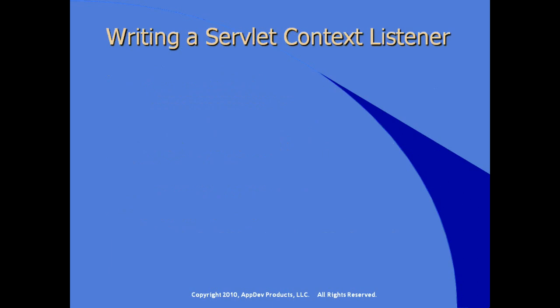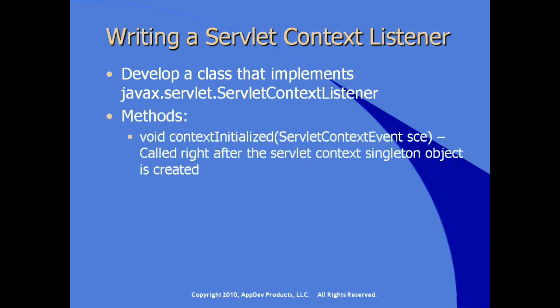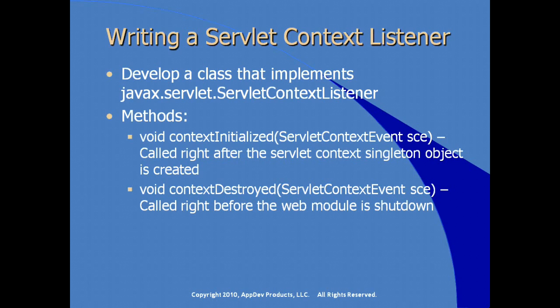To write a servlet context listener, we develop a Java class that implements the servlet context listener interface. The key methods are contextInitialized — called right after the servlet context singleton object is created — and contextDestroyed — called by the server right before the web module is shut down. Both methods receive a servlet context event object, from which we can call utility methods including getServletContext to get a handle to the servlet context object.